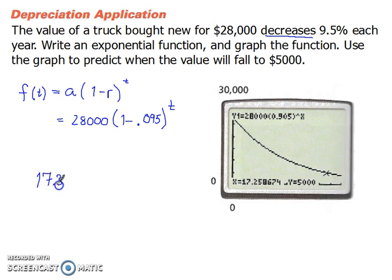So it will take about 17.3 years, 17.3 years for the value to be about $5,000. And that ends our video lesson on exponential functions, growth, and decay.